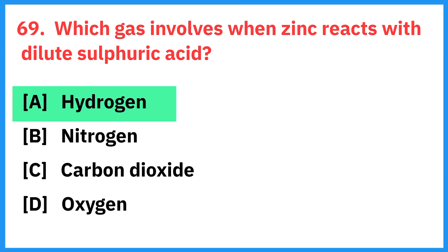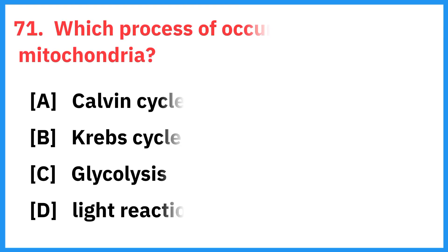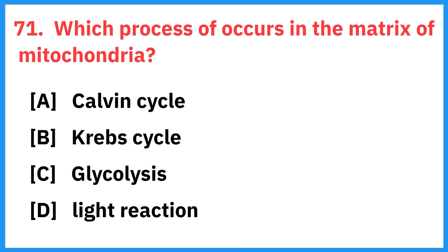Which gas is involved when zinc reacts with dilute sulfuric acid? Correct answer is hydrogen. Which of the following has the maximum number of lone pairs on the central atom? Right answer is H2O.